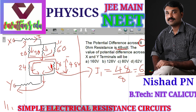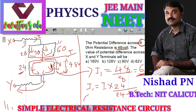Now we use the current division rule. The incoming current to this node is I. I1 equals total current I multiplied by the opposite branch resistance — 24 ohm — divided by total resistance, which is 24 plus 8, equal to 32.